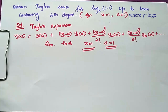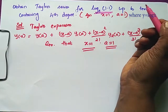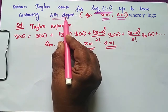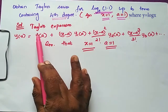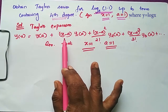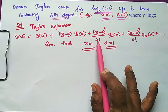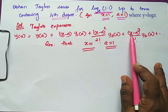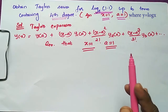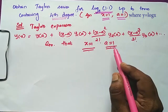Obtain the Taylor series for log(1.1) to base e at x equal to 1.1, centered at a equal to 1. We have to find up to the fourth degree. So I am writing the Taylor's expansion: y(x) = y(a) + (x−a)·y₁(a) + (x−a)²/2! · y₂(a) + (x−a)³/3! · y₃(a) + etc. Given x = 1.1 and a = 1.